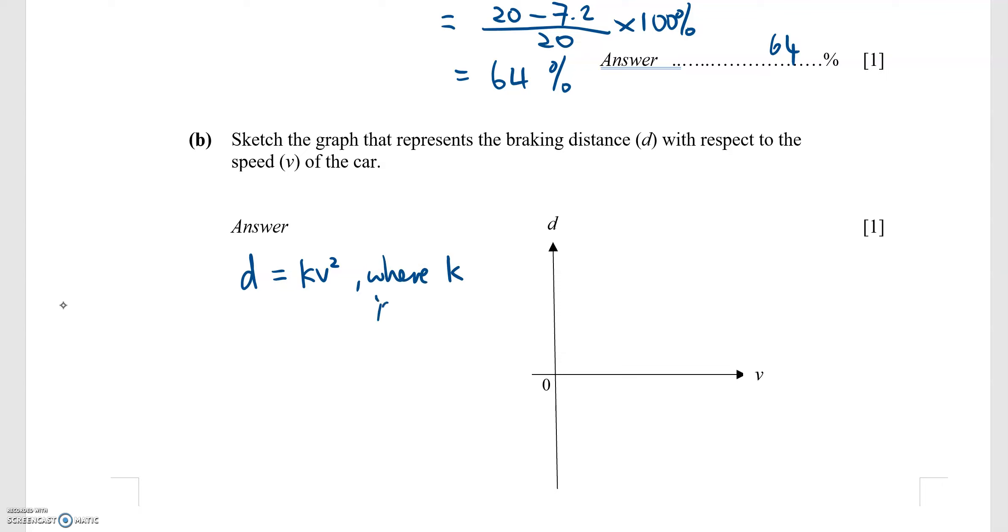So if I'm drawing a graph of d against v, I am essentially plotting a quadratic curve. So I see the parallel of drawing a curve for y equals ax squared.